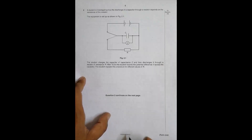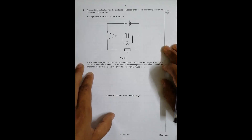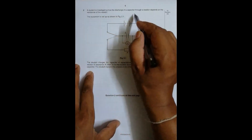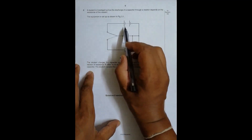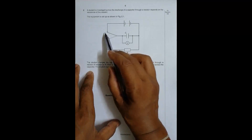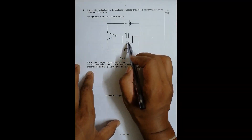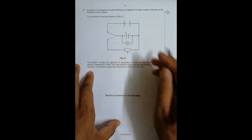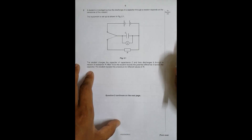This time I have a question from 2018 October/November Paper 53, question number 2. I start from question 2 because it is more objective and we can ensure a higher score if you follow a certain pattern. The question states: a student is investigating how the discharge of a capacitor through a resistor depends on the resistance. The equipment is set up with a source, a key that can connect to either the source or the resistor, a capacitor, a voltmeter measuring PD across the capacitor, and a resistor.